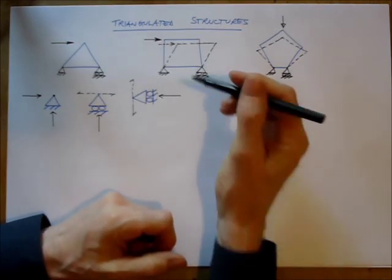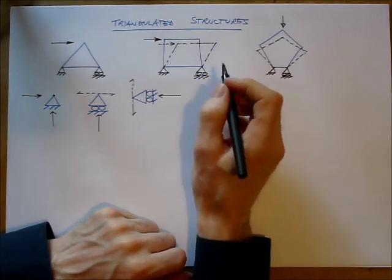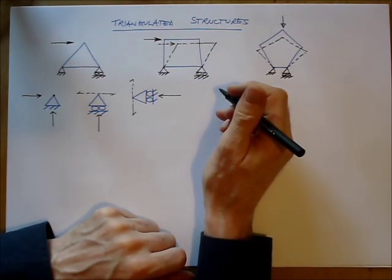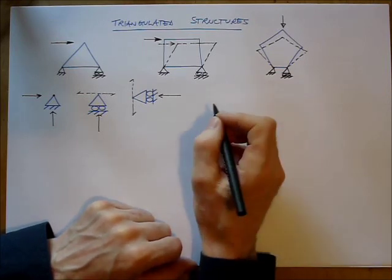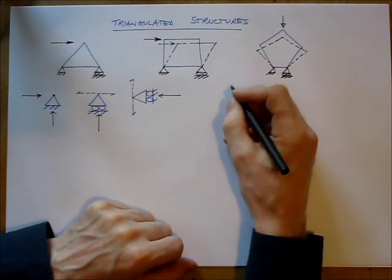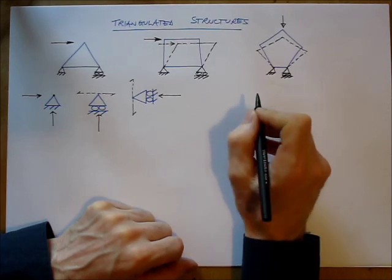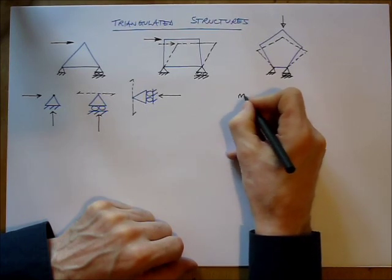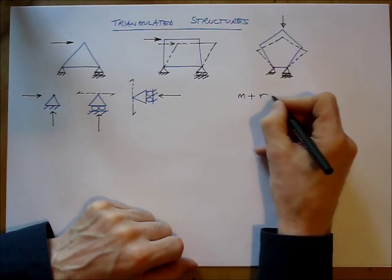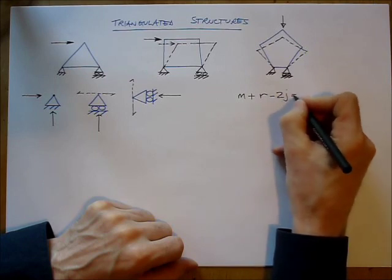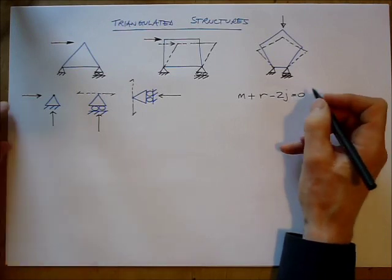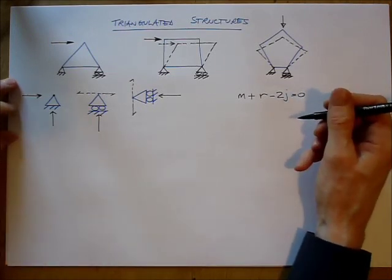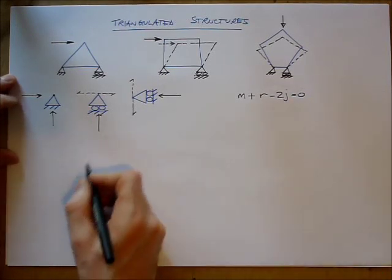Now, let's have a look at the next interesting aspect of them is their statical determinacy. Now, the statical determinacy can be checked using a simple formula, M plus R minus 2J equals zero. The easiest way to explain how this formula works is just to check a couple of simple structures.